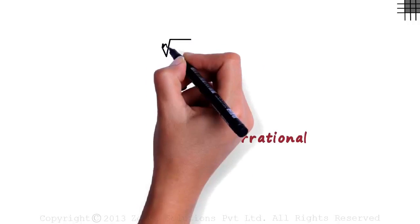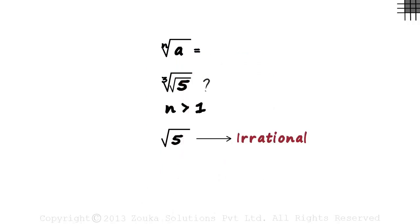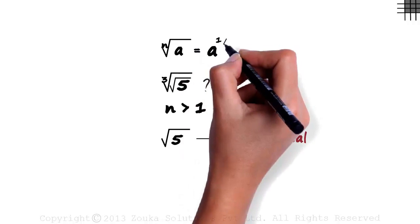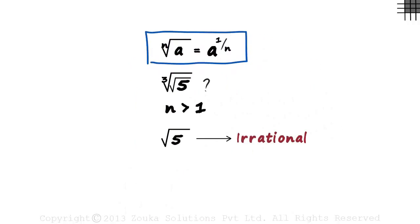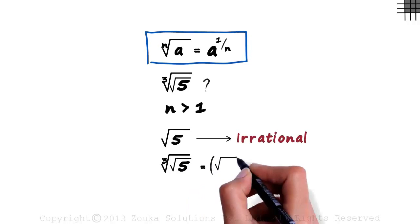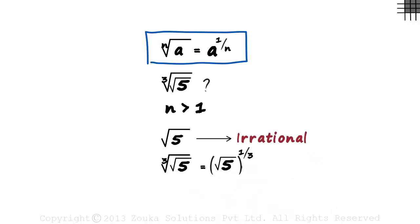We know that the nth root of a can be written in exponential form as a raised to 1 by n. This is the power or the exponent and this is the base. The exponent becomes the reciprocal of the order. So the cube root of root 5 can be written as root 5 the whole raised to 1 by 3. This is the base and 1 by 3 is the exponent.